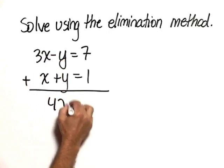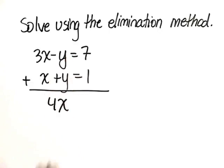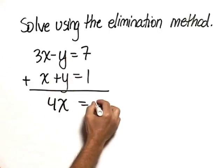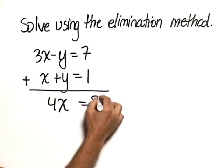3x plus x is 4x. Of course, the y's sum to 0. 7 plus 1 is 8.